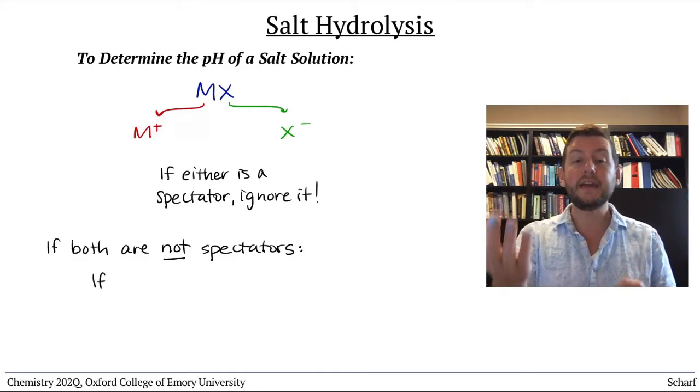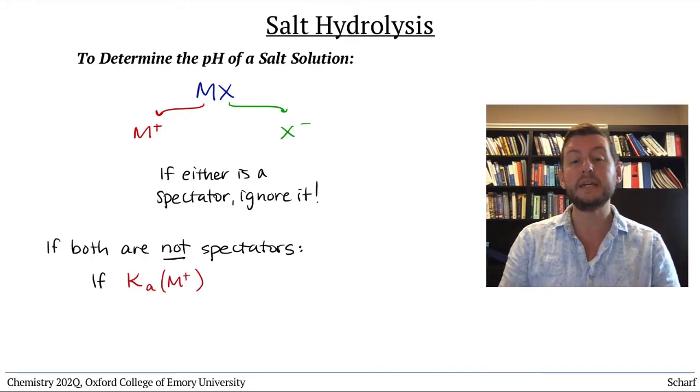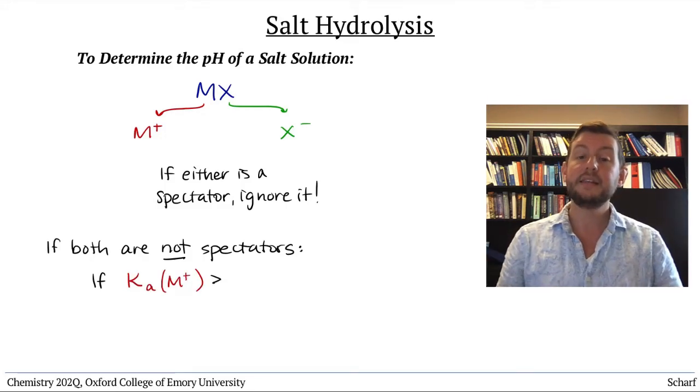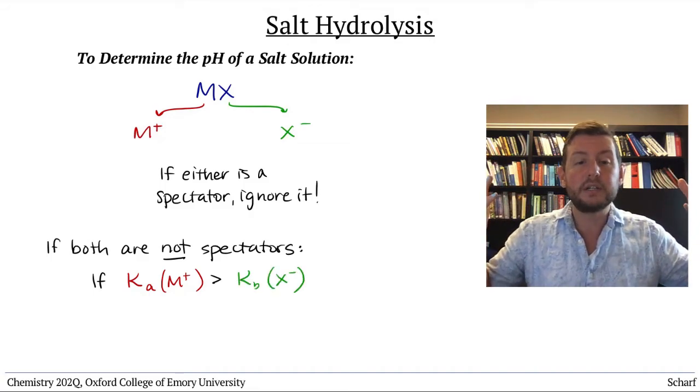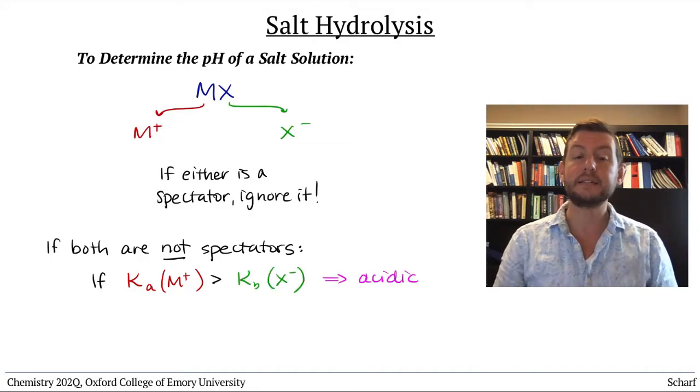If the Ka of the acid is larger than the Kb of the base, then the acid wins out and the solution has a slightly acidic pH.